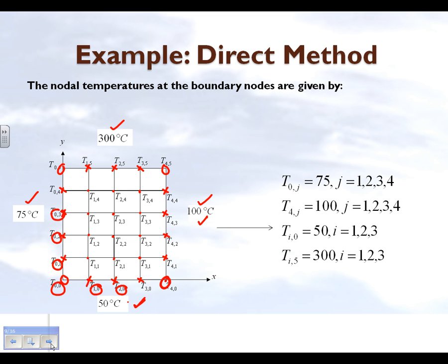The bottom line is that we have these nodes in the rectangular plate — we have 5 nodes in each row and 6 rows, giving us 30 nodes total. However, the temperature is only unknown at the 12 internal nodes. Since we already know the temperatures at the external nodes, this sets up a system of 12 equations and 12 unknowns. Let's see how we can find the temperature of these interior nodes.